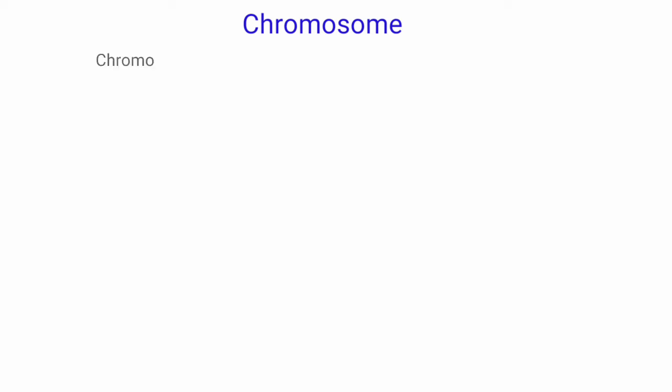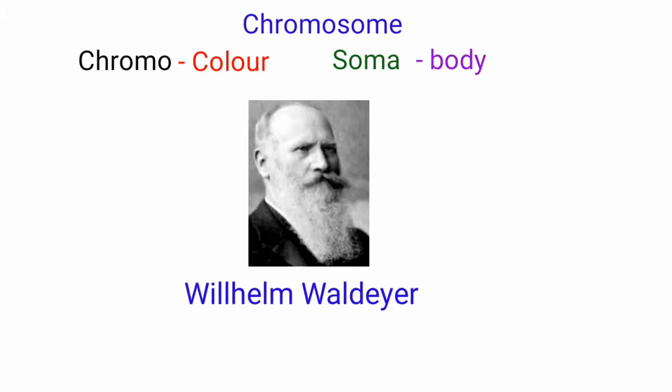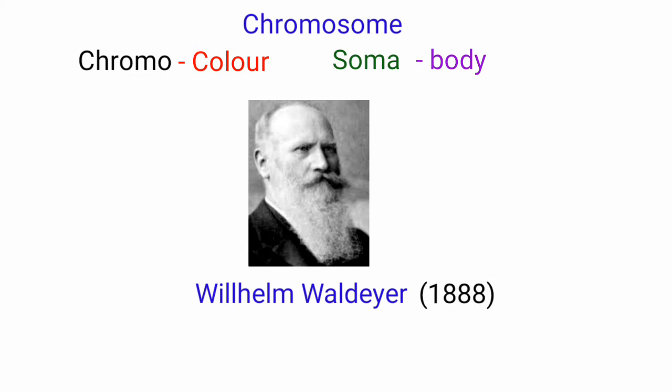The term chromosome is derived from two Greek words. Chromo means color, soma means body. It was coined by W. Waldeyer in the year 1888.